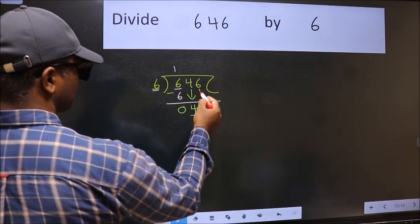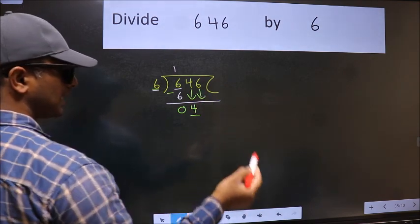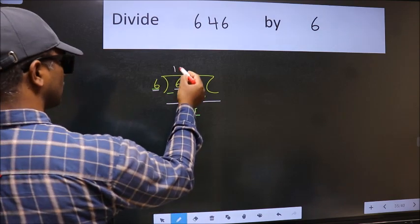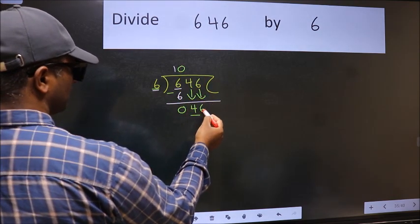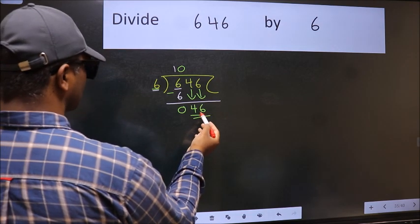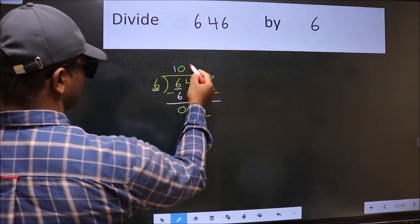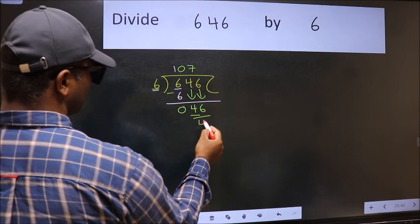The rule to bring down the second number is we should put zero here. Then only we can bring this number down. Now 46. A number close to 46 in the 6 table is 6 times 7 equals 42.